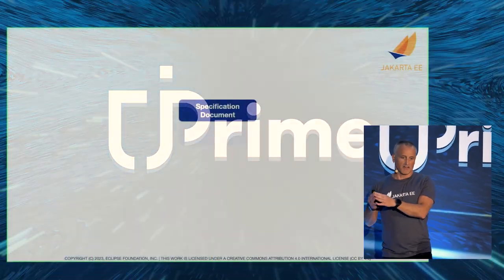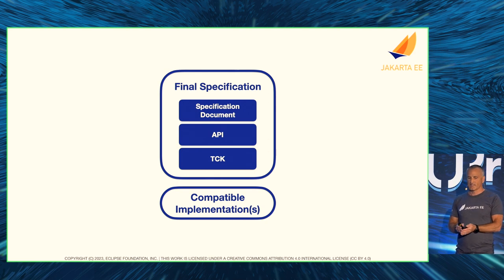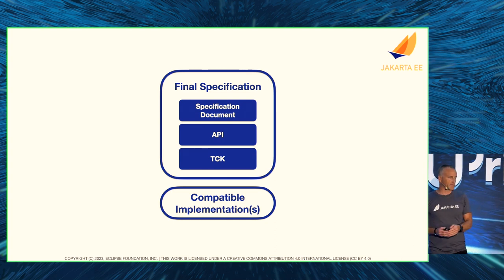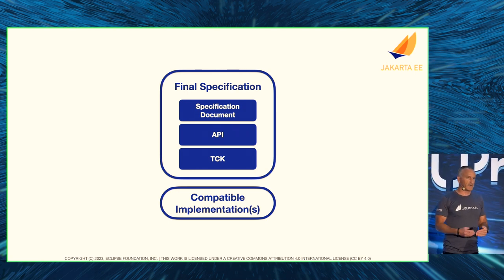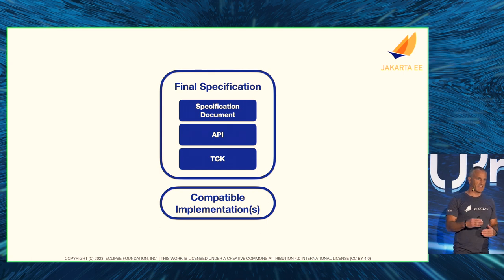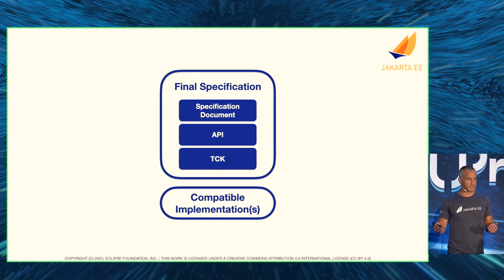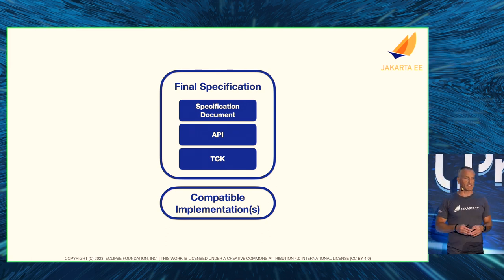Jakarta EE 10 is the latest release, released in September last year. Jakarta EE is all about specifications — a specification document describing requirements and behavior, an API artifact available in Maven Central, and a TCK or Test Compatibility Kit used to verify that an implementation meets the specification. An implementation that passes the TCK is a compatible implementation, and at least one — which must be open source — is required to ratify a final specification.